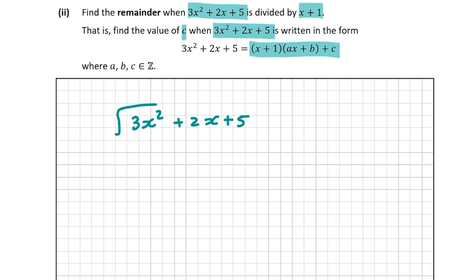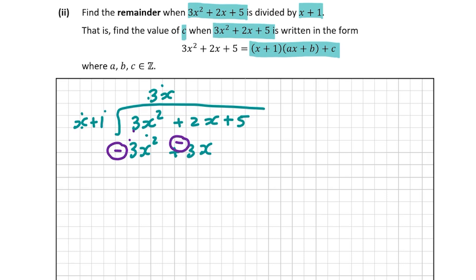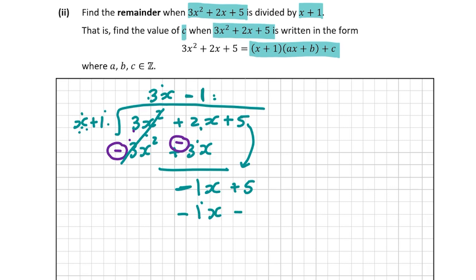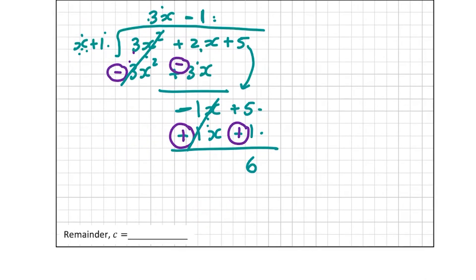Dividing 3x² + 2x + 5 by (x + 1): x into 3x² gives 3x. Then 3x × (x + 1) = 3x² + 3x. Changing signs to cancel: 2x - 3x = -x. Bringing down the +5, we now divide x into -x to get -1. Then -1 × (x + 1) = -x - 1. Changing signs to cancel leaves a remainder of 5 + 1 = 6. So C = 6.